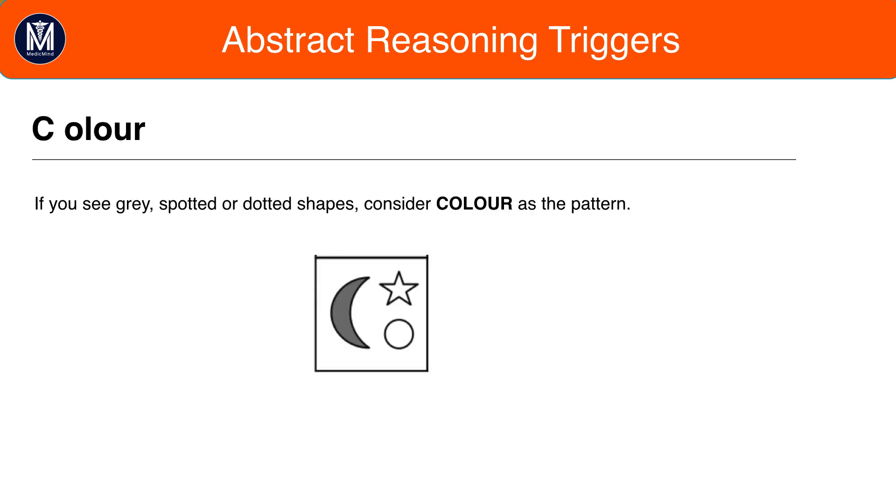Next we have color. In the UKCAT they'll tend to use black and white shapes as their staple color, however at times they'll expand into grey shapes, spotted shapes and striped shapes. If you see these new variations immediately think of color because they would have used these for a reason. Additionally bear in mind that stripes can point in a certain direction.